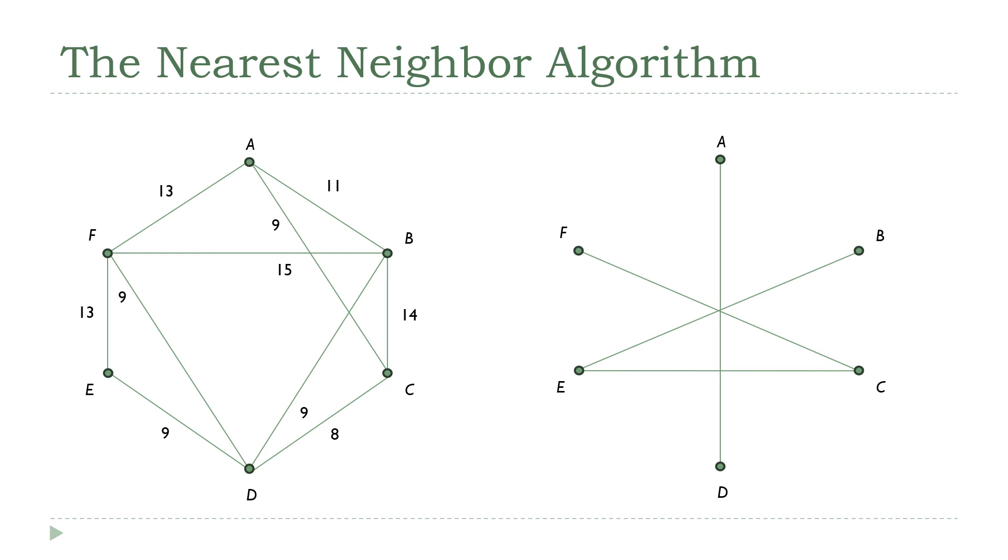And now, we're down to that 8 connecting D and C, but I don't want to add that one, right? Because if I add that one, our salesman is going to have to visit location C more than once. I don't want to have any vertex that has a degree greater than 2. So, I'm going to skip that one, and I'm going to look to the 9s, and I've got a couple options here. I don't want to include ED. I'm not going to pick that one for the same reason I didn't pick DC.